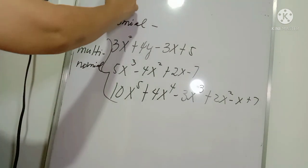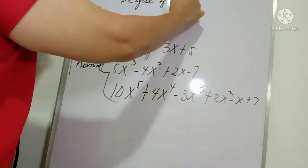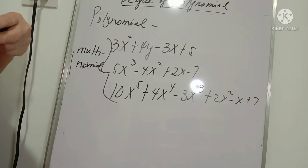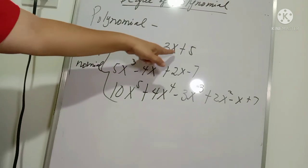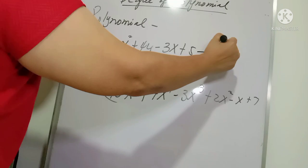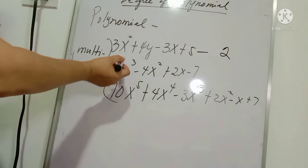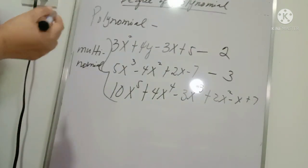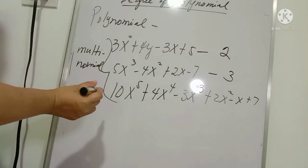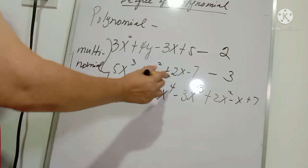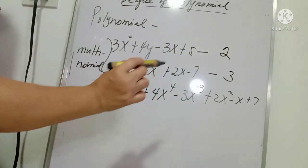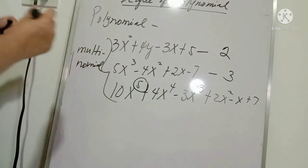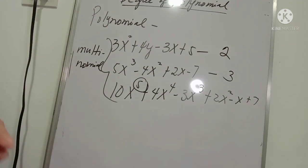When we talk about the degree of a polynomial, it refers to the highest exponent. For example, in 3x² + 4y − 3x + 5, the degree is 2. In 5x³ − 4x² + 2x − 7, the degree is 3. And in 10x⁵ + 4x⁴ − 3x³ + 2x² − x + 7, the highest exponent is 5, so the degree of that polynomial is 5.